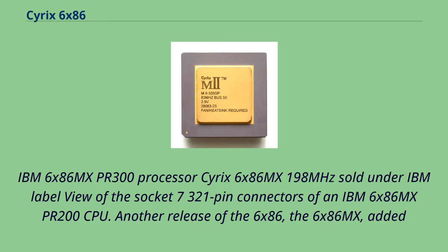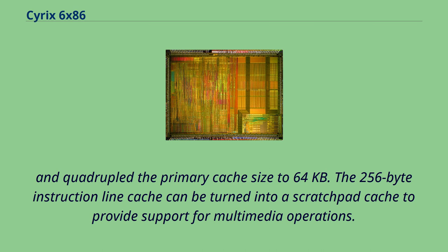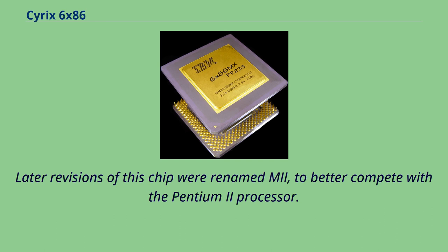Another release of the 6x86, the 6x86 MX, added MMX compatibility along with the CMOVcc instruction set, improved compatibility with the Pentium and Pentium Pro by adding a timestamp counter and CMOV instructions respectively, and quadrupled the primary cache size to 64 kilobytes. The 256-byte instruction line cache can be turned into a scratchpad cache to provide support for multimedia operations. Later revisions of this chip were renamed Mi, to better compete with the Pentium II processor.